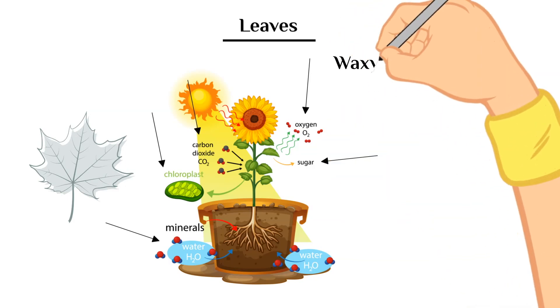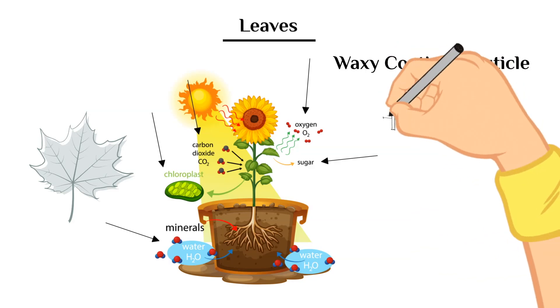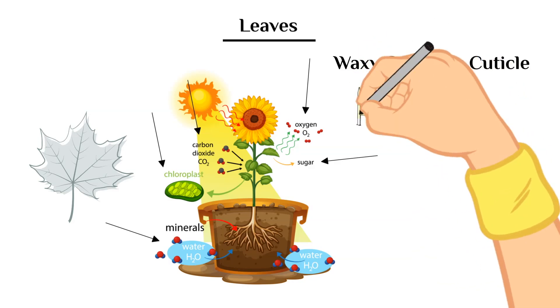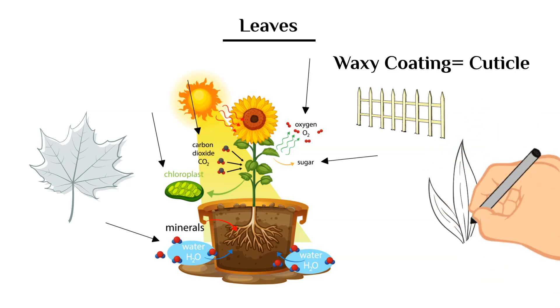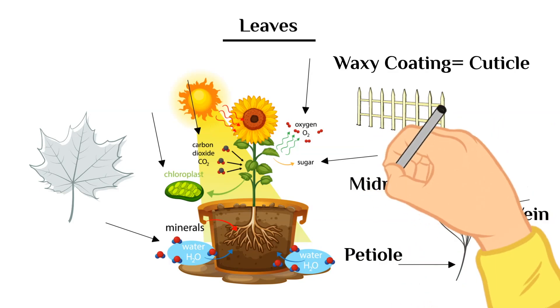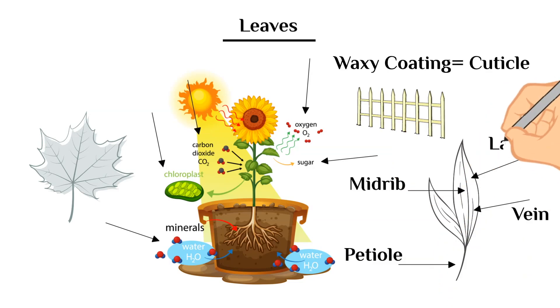Now that we've talked about the purpose of leaves, let's talk about the structure. Leaves have this waxy coating on them that is called the cuticle, and this protects the leaves in most cases. And then there are parts on a leaf. And some of these parts are the petiole, the vein, the mid-rib, and the lamina.